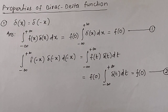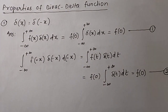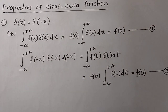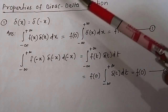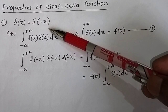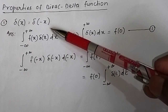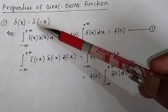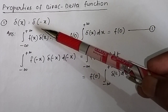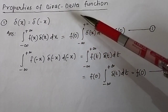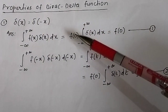Property of the Dirac delta function: δ(x) = δ(-x). This is one property of the Dirac delta function. Let us see how we can prove that δ(x) = δ(-x).